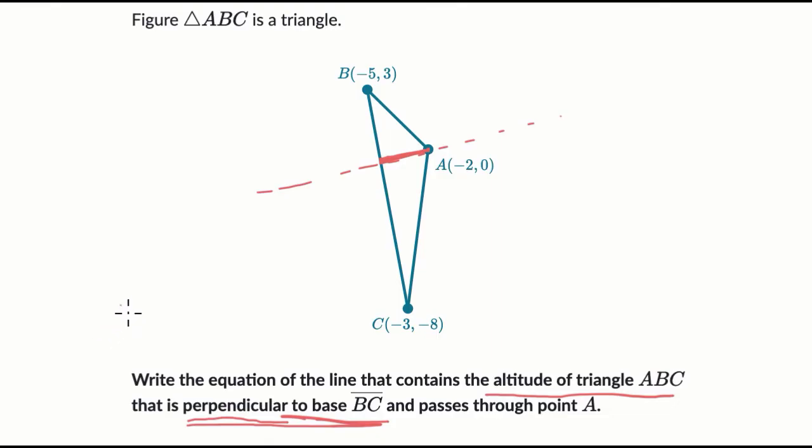Well, the first step is, let's see if we can figure out the slope of that line. How do we do that? Well, we have a clue. That line is going to be perpendicular to base BC. So if we can figure out the slope of BC, then we could use that to figure out the slope of this line here.